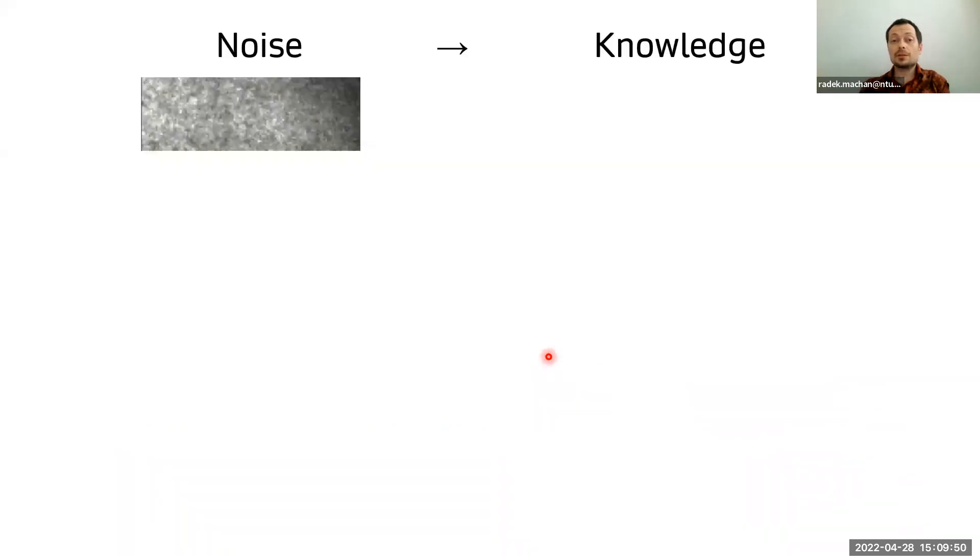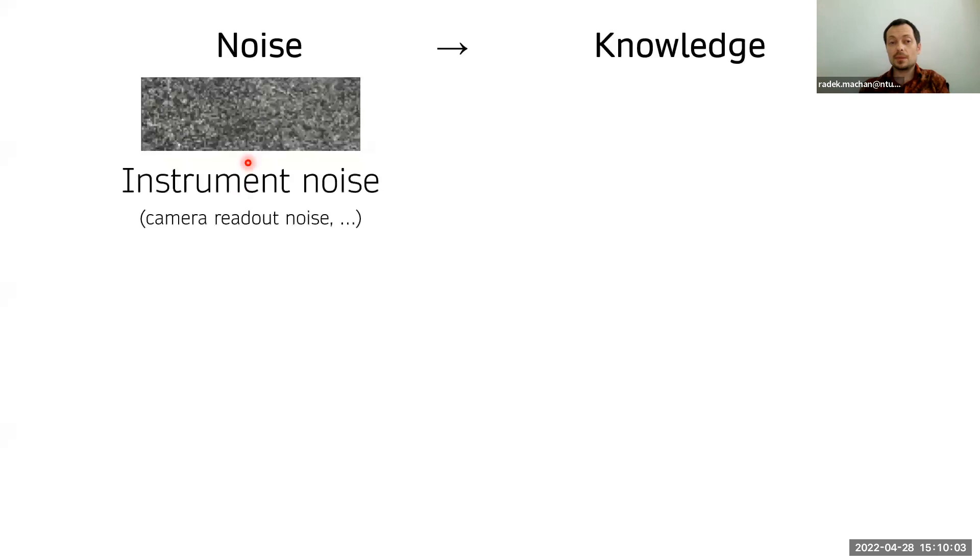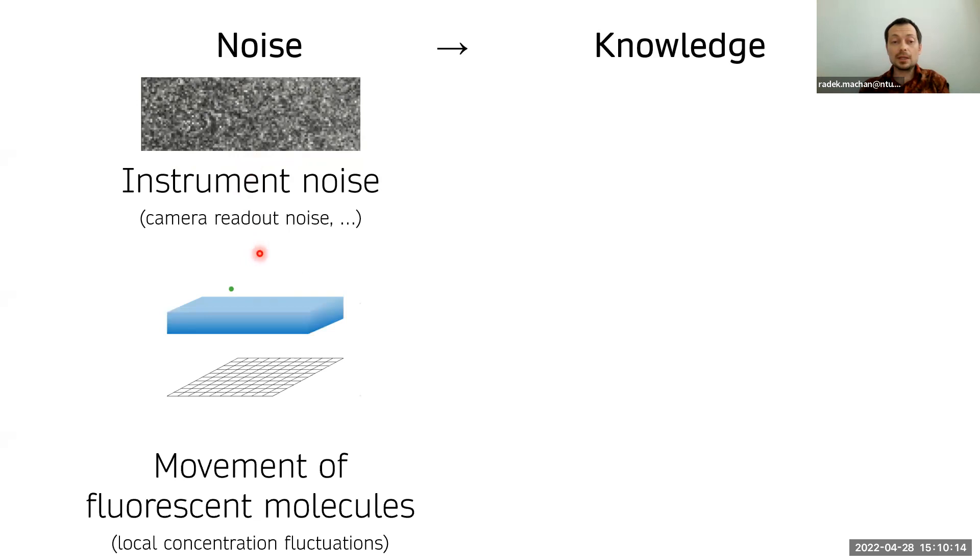I call this talk from noise to knowledge, because we start with very noisy images or very noisy videos, and we want to derive information about the processes which cause this noise. Of course, every image will contain some noise from the instrument itself, such as camera readout noise, but that doesn't tell us anything about the sample. So we are interested here in the noise caused by movement of fluorescent molecules.